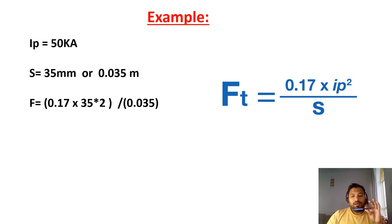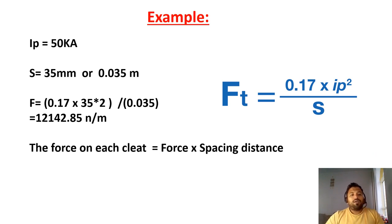Then I am applying the values. So I want to find out Ft, Ft value is equal to 0.17 times 35 whole square, 35 square, divided by 0.035. Then you will get a value. This is equal to 12,142.85 Newton meter.